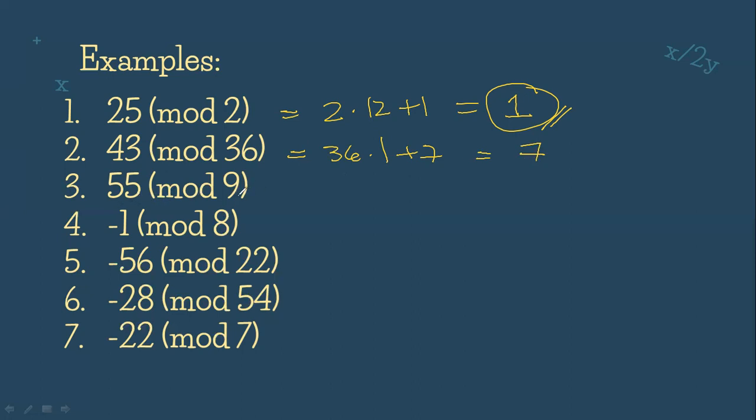So 55 mod 9, that is just like saying 55 divided by 9. Then what will be the remainder? That will give us 9 times 6, that's 54, plus 1 equals 55. But again, the modulo is asking for the remainder. So our answer is 1.